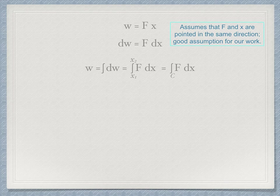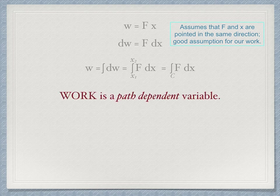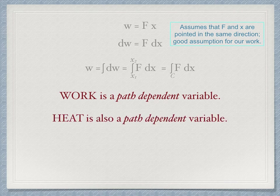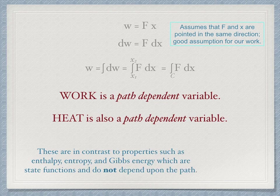Because this is a line integral, the work done depends upon the path taken, depending both on a variation in displacement, also depending on a variation in force. We say that work is a path-dependent variable. A similar analysis would reveal that heat is also path-dependent. The idea of a path-dependent variable is in contrast with other properties of thermodynamic systems, such as enthalpy, entropy, or Gibbs energy, which are state functions. And their changes are independent of the path taken.